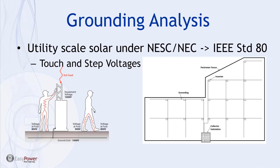Step and touch voltages are dangerous conditions which can exist during a facility ground fault. They could lead a worker to have unsafe voltages across their body from hands to feet (touch voltage) or between their two legs (step voltage). The intent of a grounding analysis based on IEEE standard 80 is to design the grounding system such that these voltages are limited under ground fault conditions to below the established threshold values.